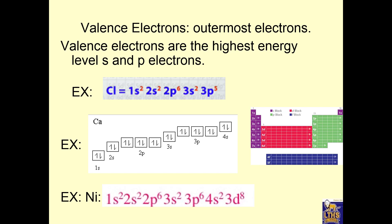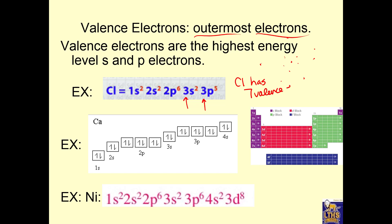Valence electrons are the outermost electrons — the ones farthest away from the nucleus. To identify valence electrons from an electron configuration, you find the highest energy level. Here's chlorine: its electron configuration uses the third energy level as the highest. Add up the S and P electrons in that energy level only, and chlorine has seven valence electrons. That's all you do — find the highest energy level used, then add up the S and P electrons in that level only.